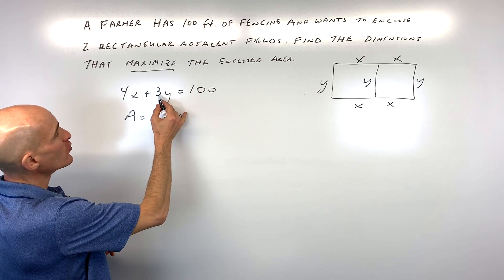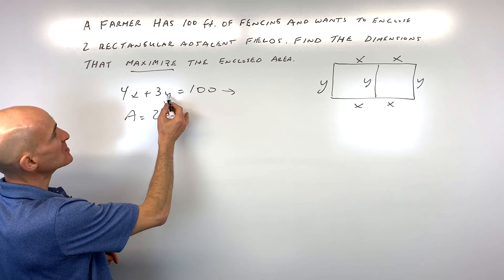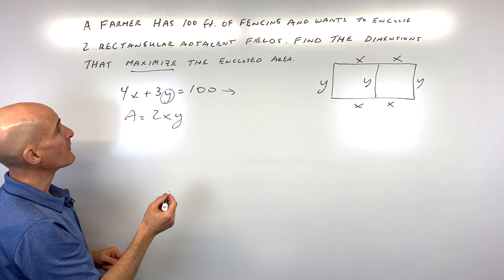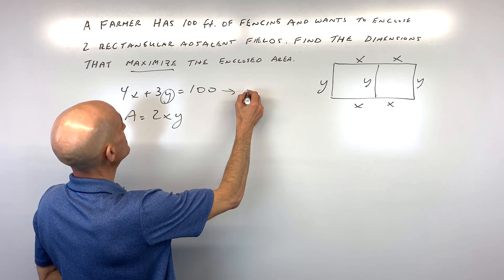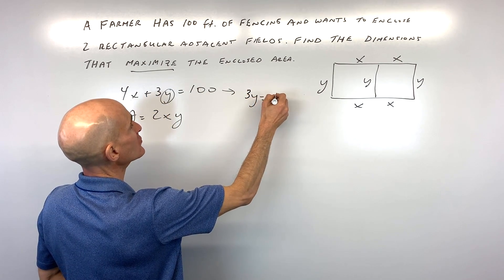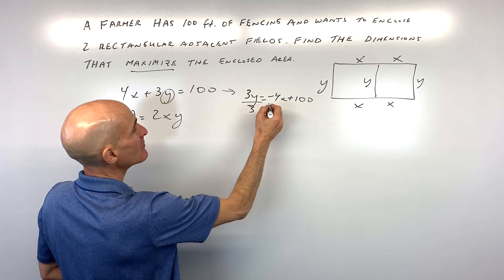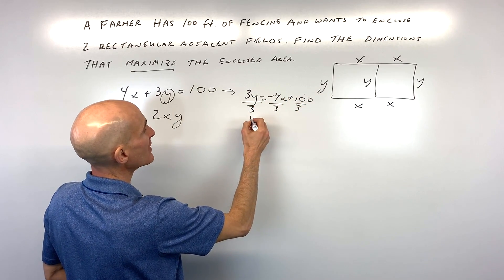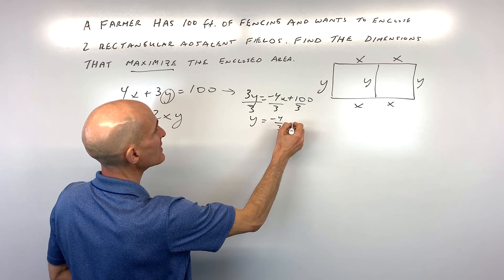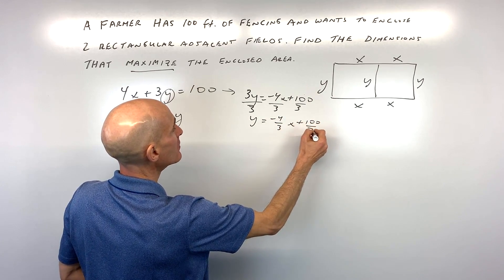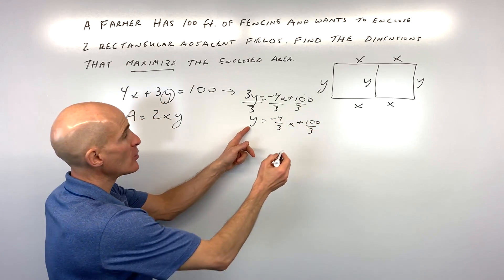So what I'm going to do here is I'm going to rearrange this perimeter equation by solving for Y. So to do that, let's subtract 4X from both sides. So we have 3Y equals negative 4X plus 100. And let's divide everything by 3. So that gives us Y equals negative 4 thirds X plus 100 divided by 3. So now we know what Y equals.